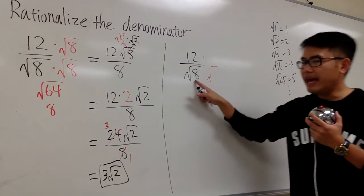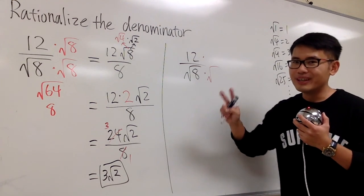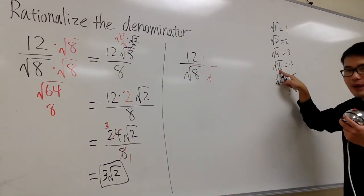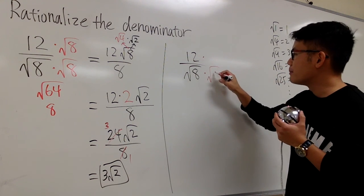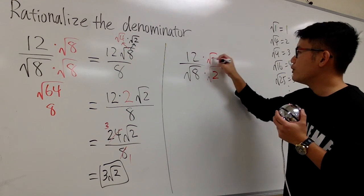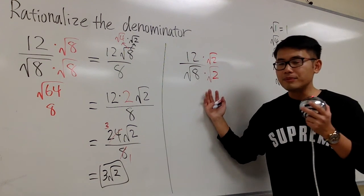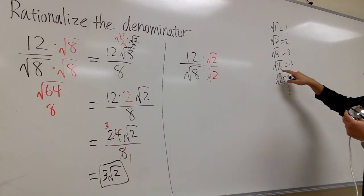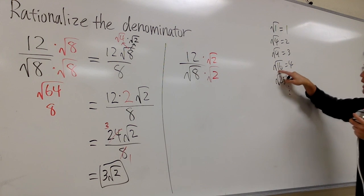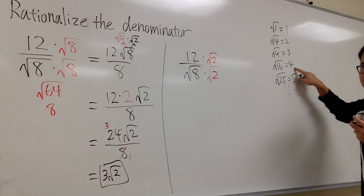The question now is that, here we have 8 inside already. 8 times what can produce one of these? Well, we know 8 times 2 can give us 16, right? So, it's a good idea to just multiply the top and bottom by square root of 2. This is enough, because once again, square root of 8 times square root of 2 will give us square root of 16. And that will eventually become a nice number 4.